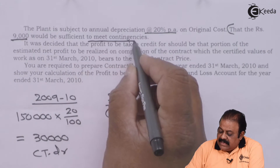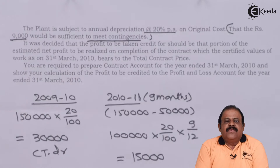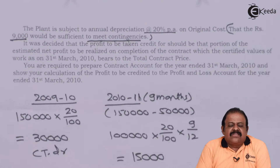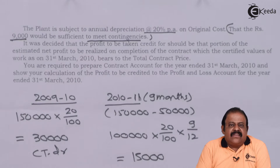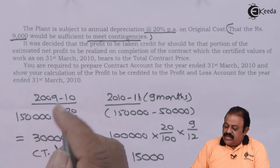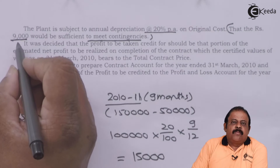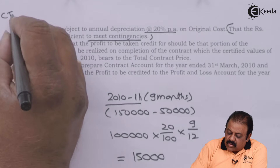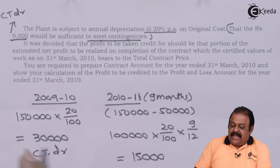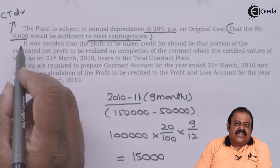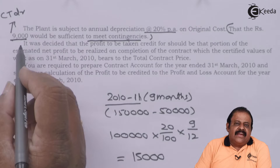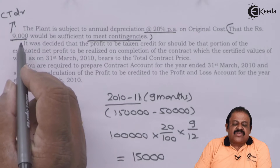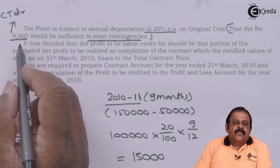₹9,000 would be sufficient to meet contingencies. Since we are preparing an estimated contract account based on certain estimated expenditure, these estimations may sometimes go wrong. Therefore, to be on the safer side, we create a margin so that we get a reasonable amount of estimated profit. This ₹9,000 is an expected difference and is debited to the total contract account.